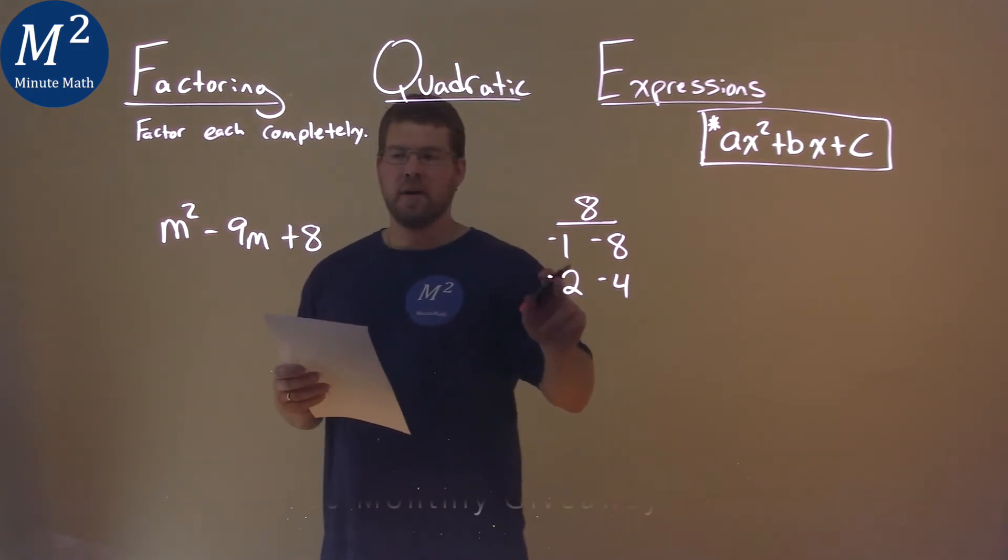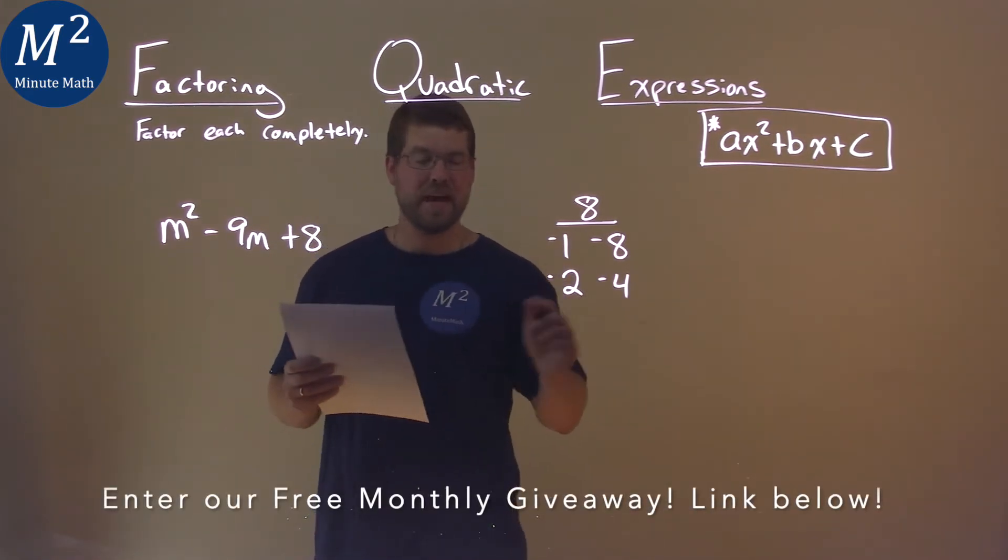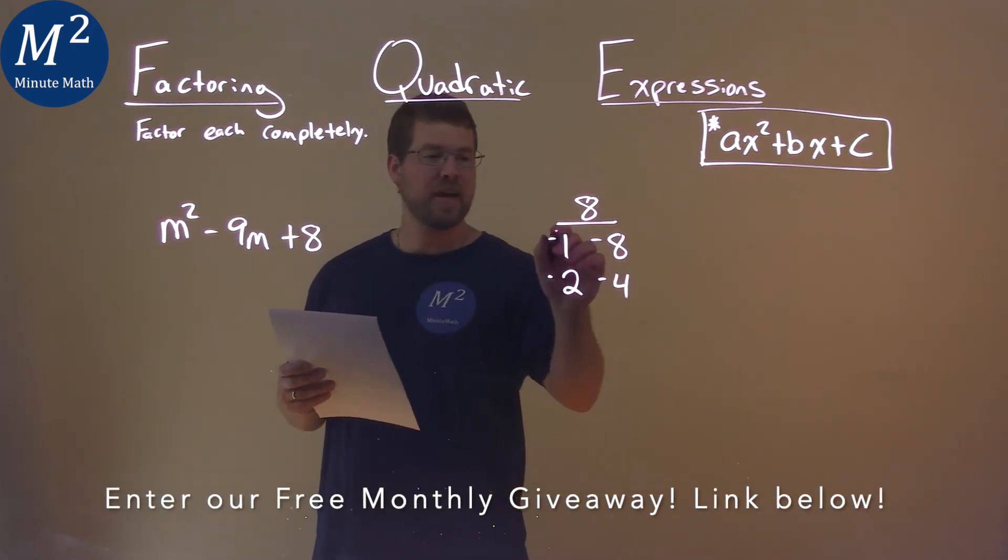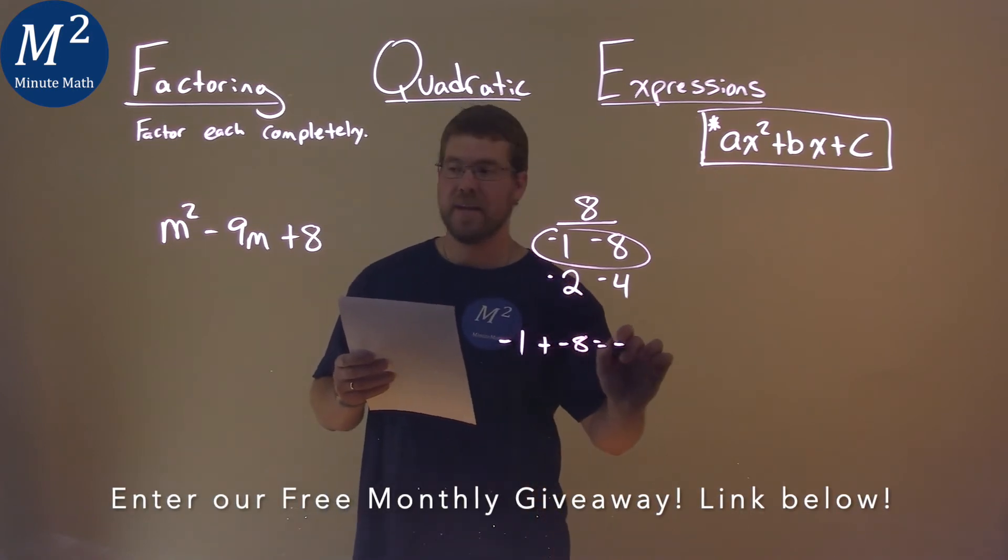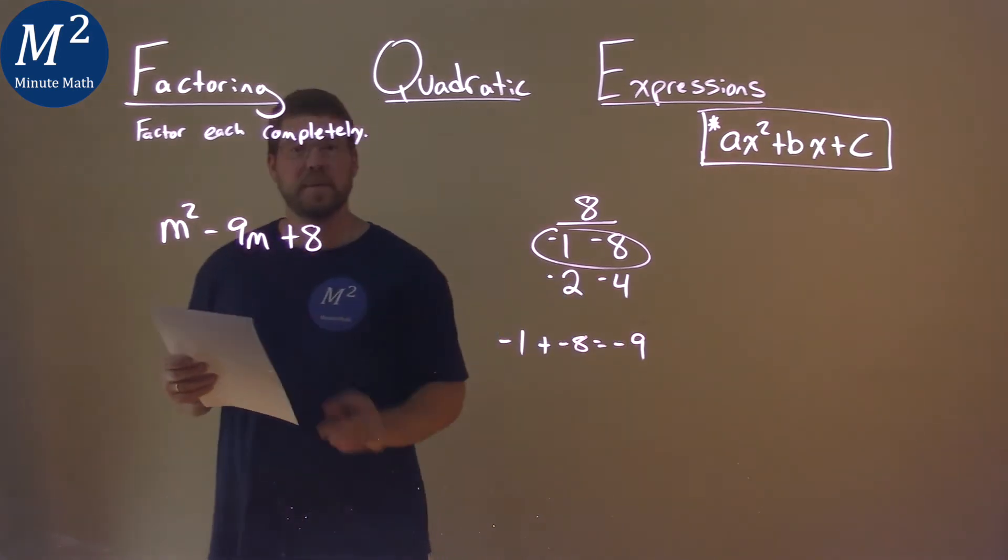So what two numbers now, together, add to be a negative 9? And that's going to be the negative 1 and a negative 8. Negative 1 plus a negative 8 equals a negative 9, our b value.